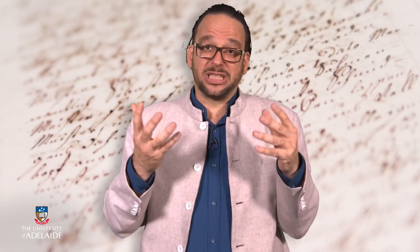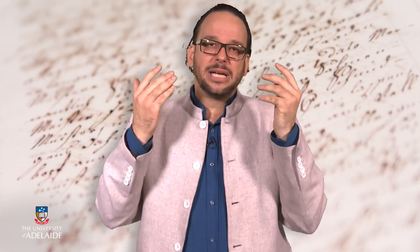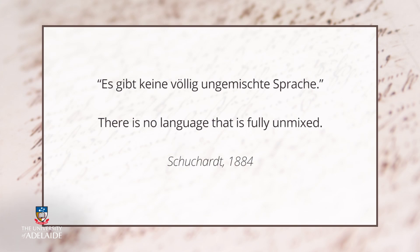After all, every language is mixed to some extent — see Hjelmslev 1938, as well as Schuchardt's 1884 statement: "Es gibt keine völlig ungemischte Sprache" — there is no language that is fully unmixed. Such congruence is a commonplace observation in Pidgin and Creole studies, as well as in research into many other languages. Kerswill, for example, describes in 2002 how features found in several varieties are the most likely to survive in koine formation.